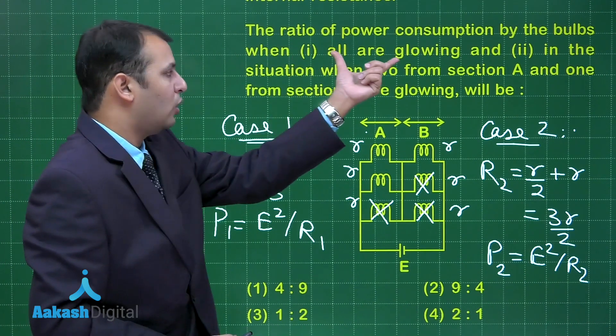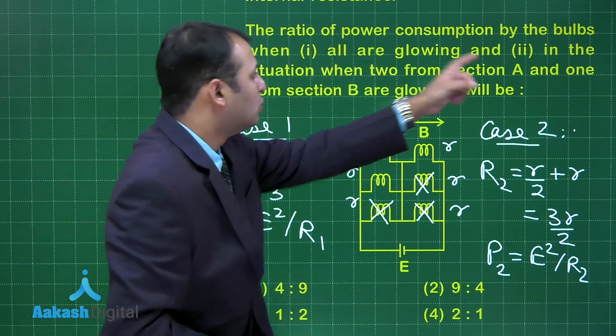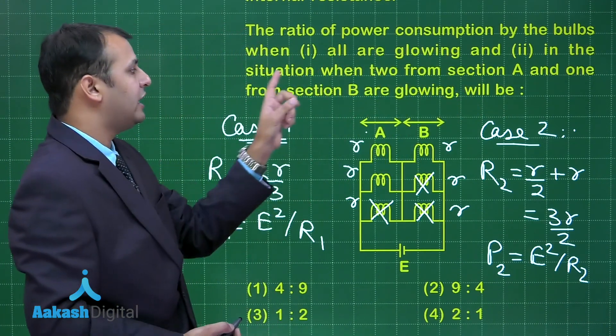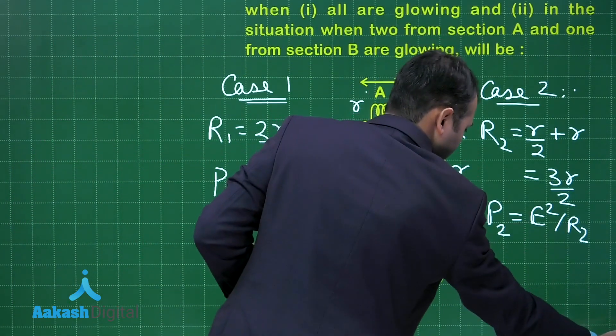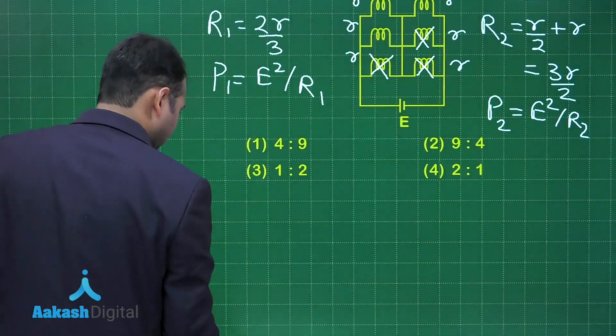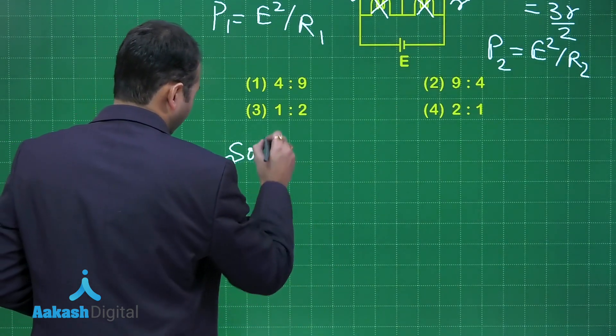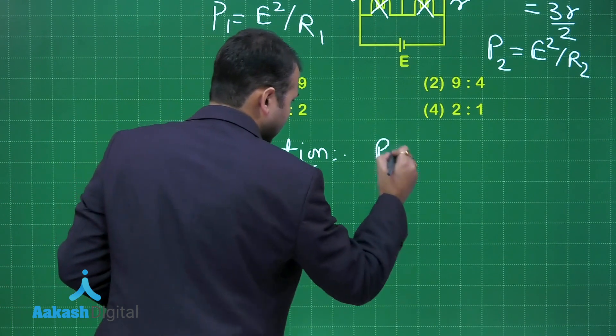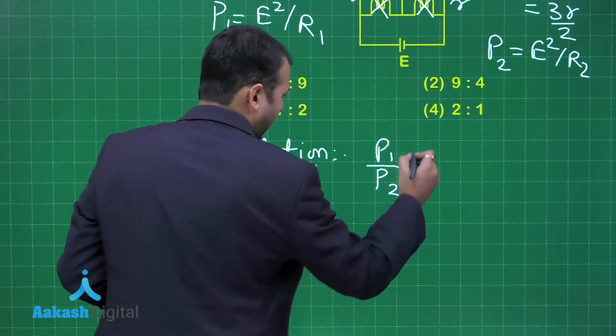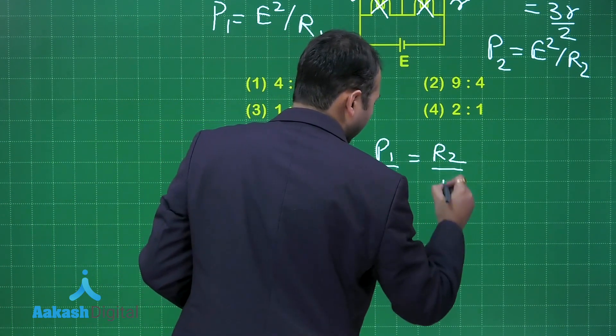The ratio required is power consumption by the bulbs when all are active, that is P1, to in the case when two from section A and one from section B is glowing, that is P2. If you mark the solution here, you will get what question is asking is the ratio of P1 is to P2, and this will be equal to R2 by R1.